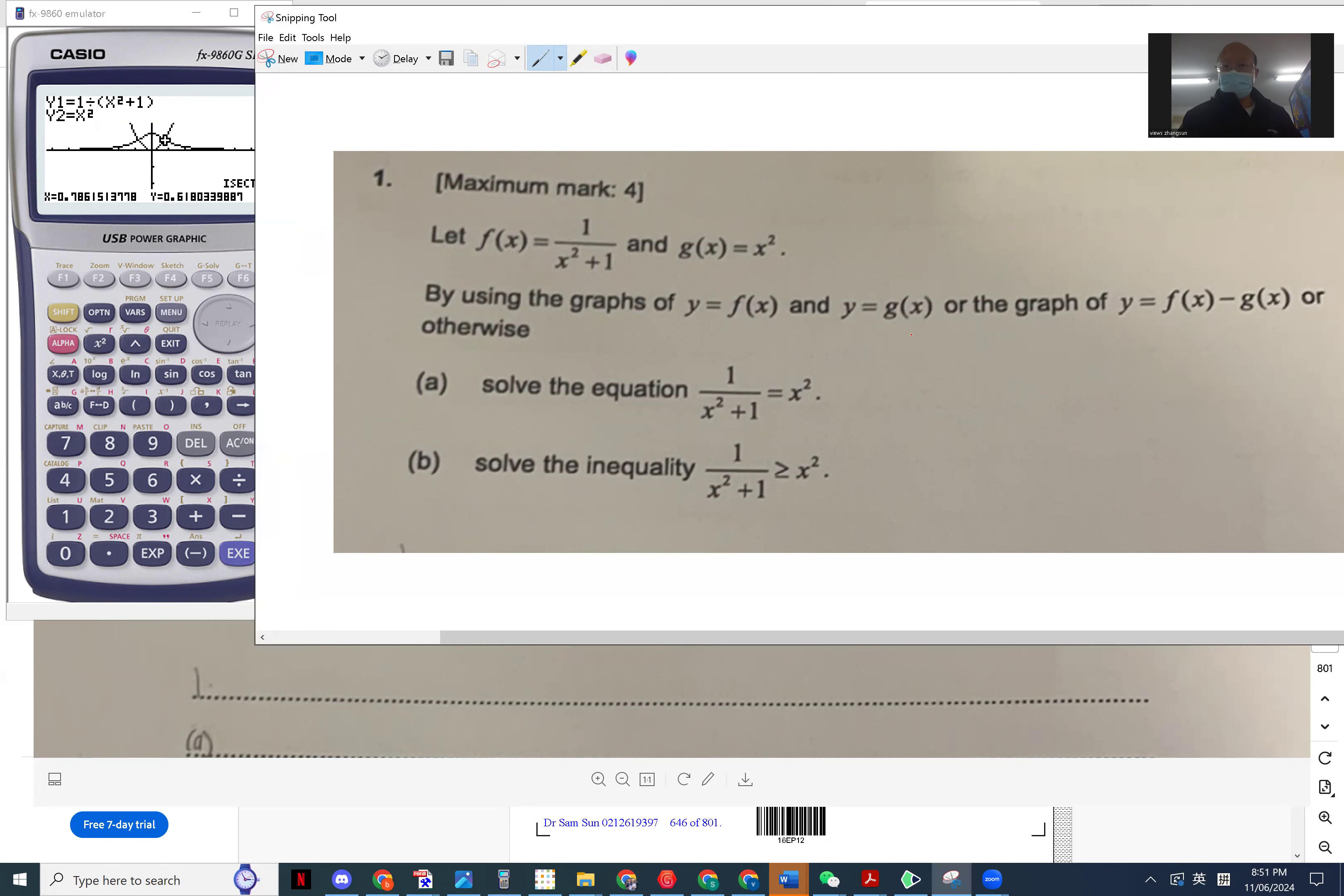There are two here. By calculator, by GDC you have these two graphs, so you have x equals plus minus 0.786.